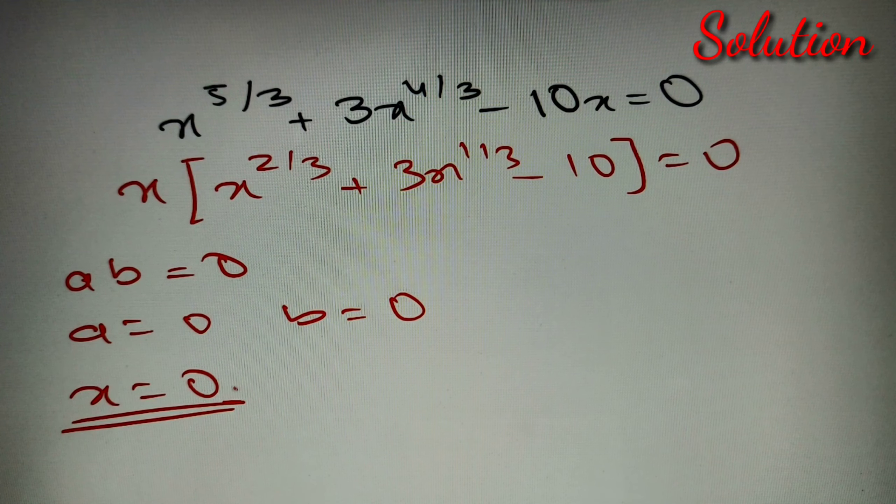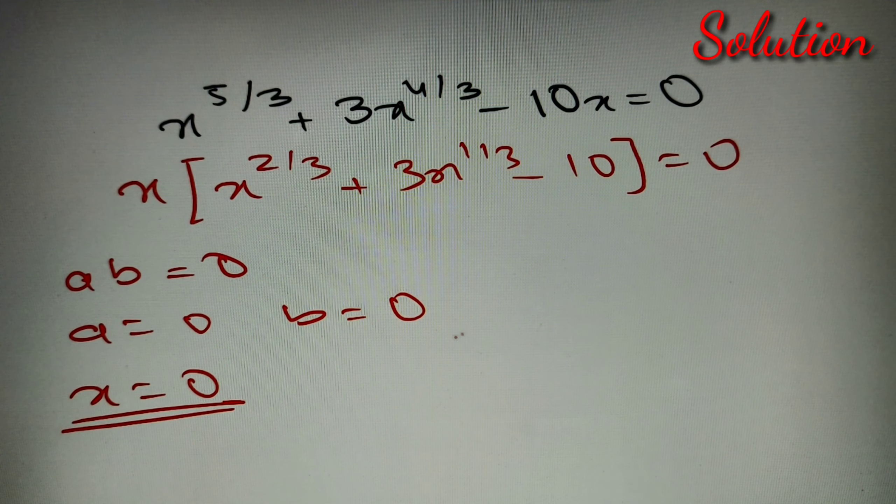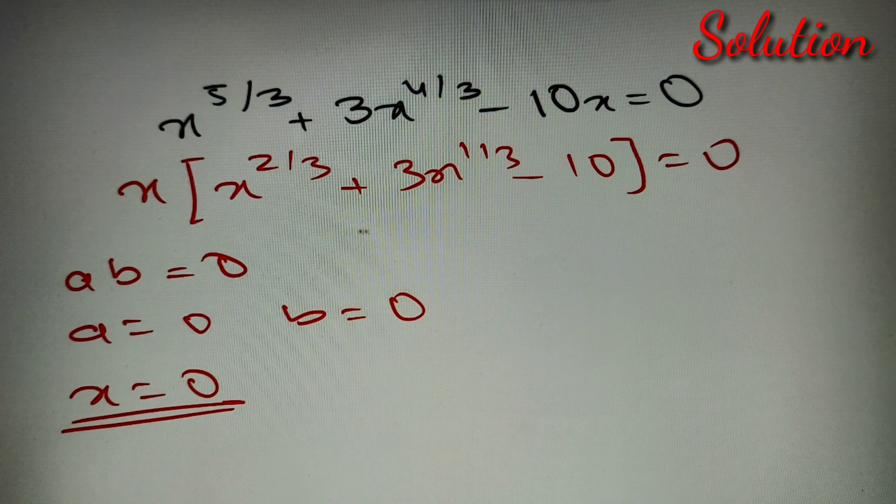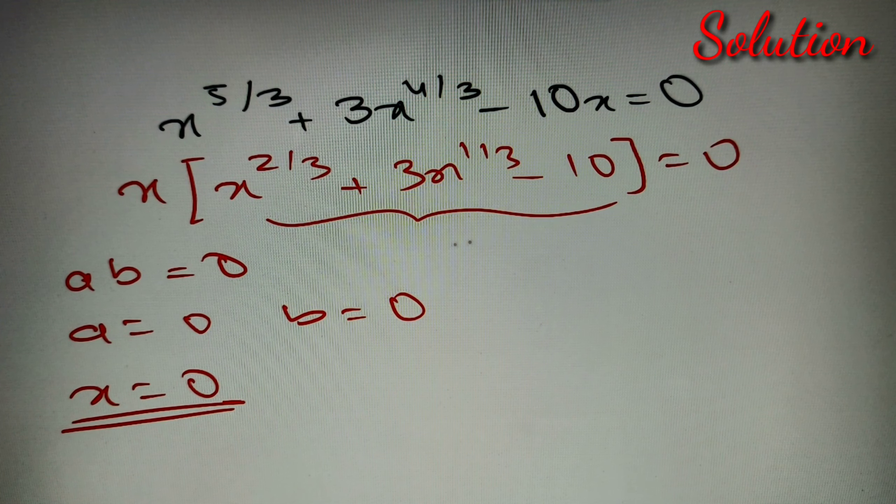So we have got one direct value of x, that is x = 0. And now let's take that b = 0, so this part is equal to 0.